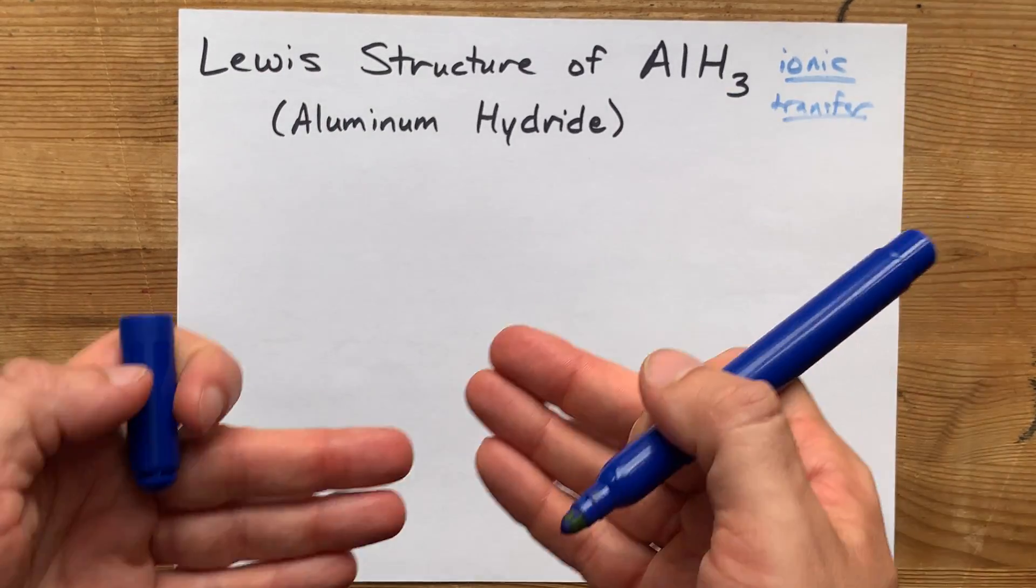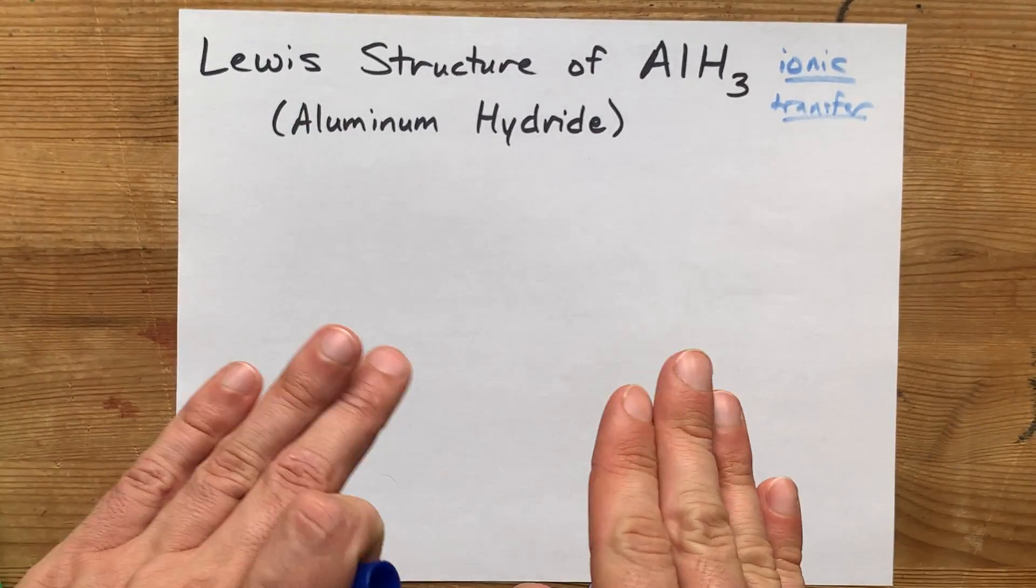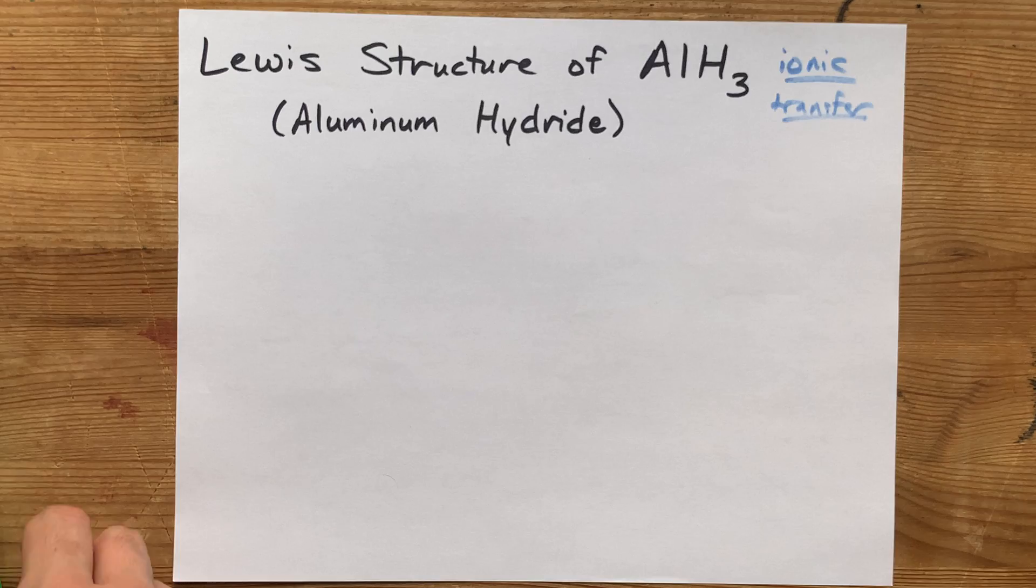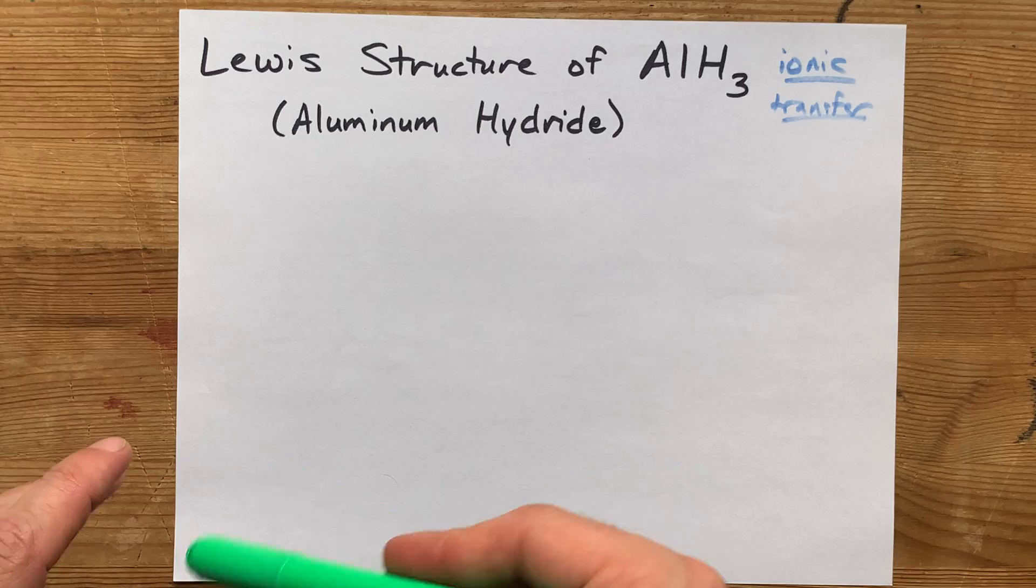Now this one is only going to seem weird because hydrogen normally gives its electrons away. It normally has a charge of plus one, but in hydrides, they actually end up with a charge of minus one.